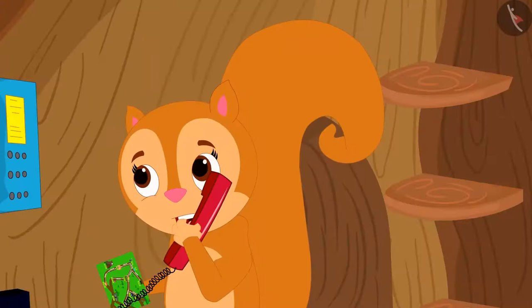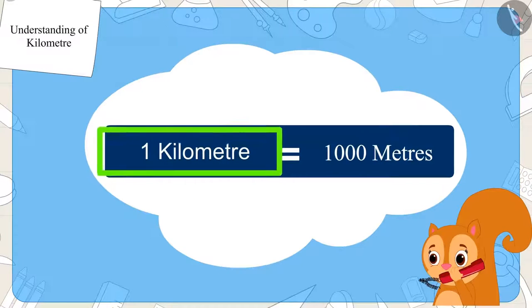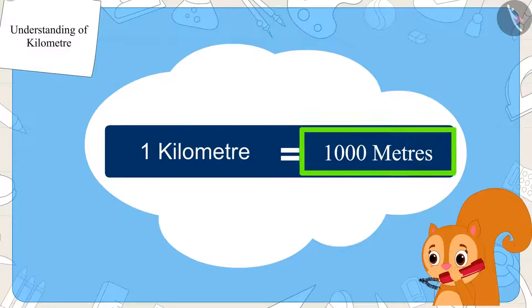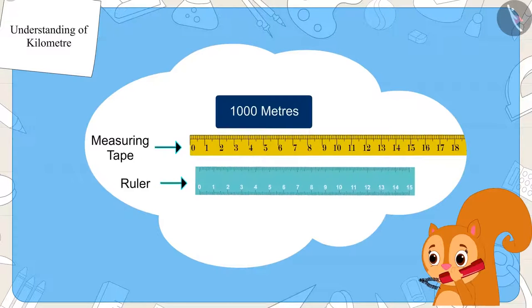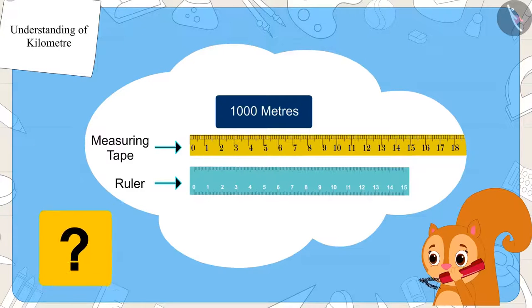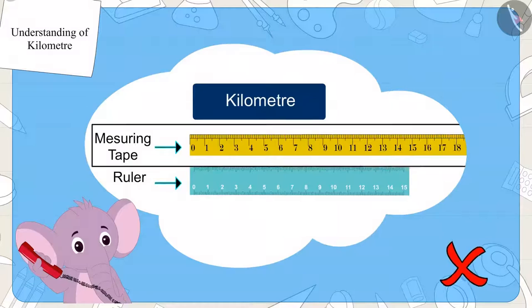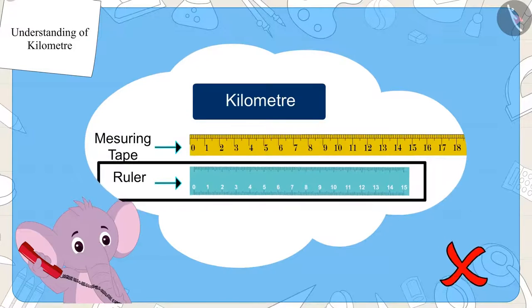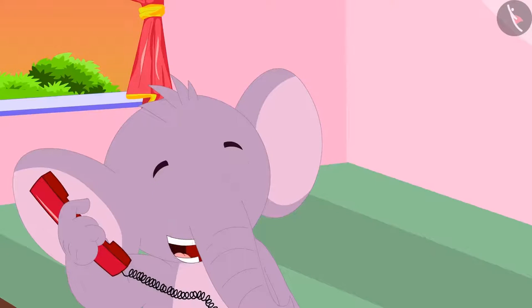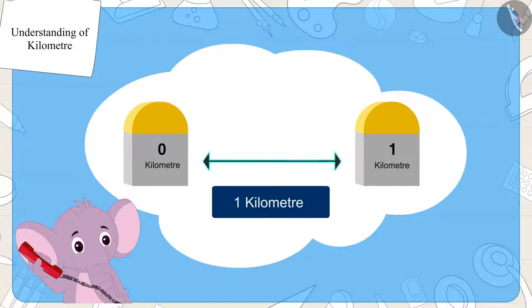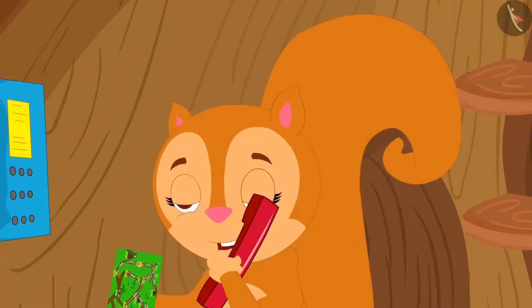Chanda said, very good! But Appu, if one kilometer is equal to one thousand meters, then we will not be able to measure it with a measuring tape or a ruler. So how can we measure the distance between two places? Appu explained that you cannot measure a kilometer with a measuring tape or ruler — special resources are used for this. You can find the distance between two places by looking at the distances written on the signs on the road.